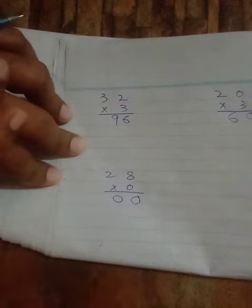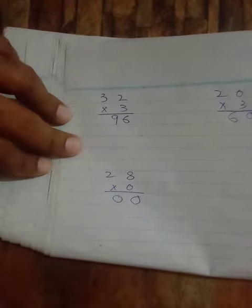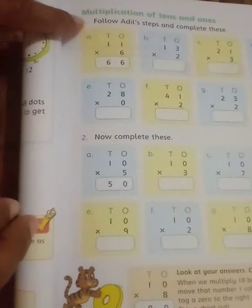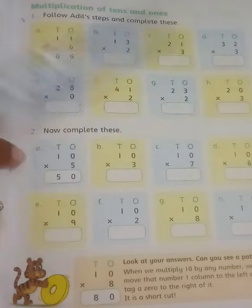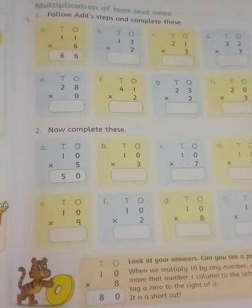Remember, when we multiply any number by 0, we get 0. This completes exercise number 1. We will send this to WhatsApp. Thank you.